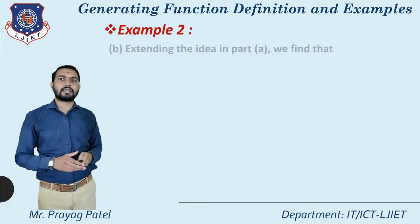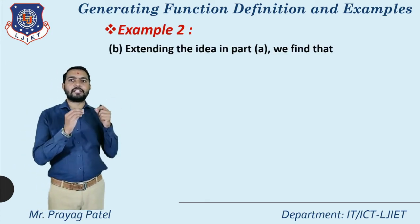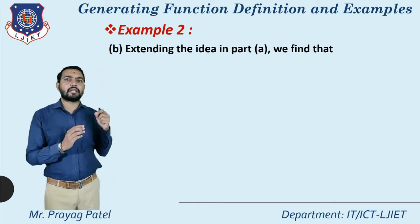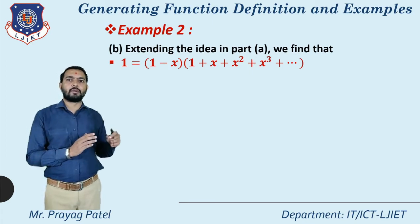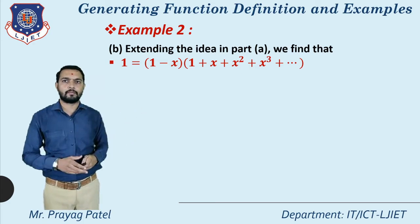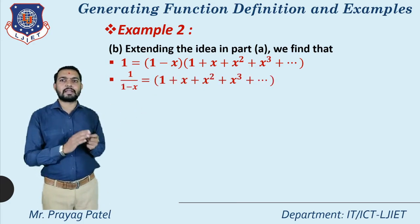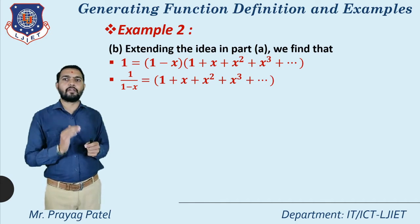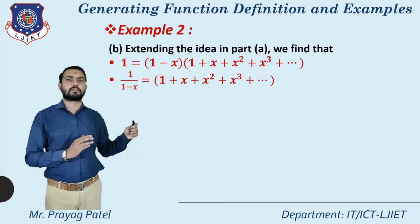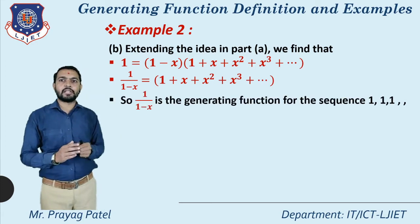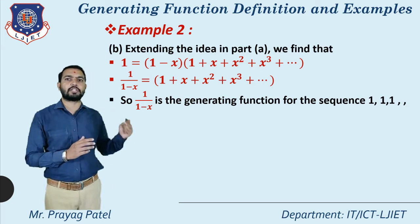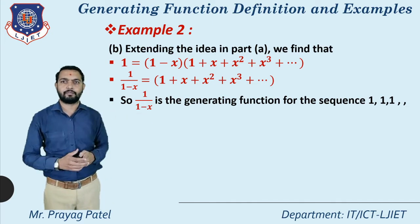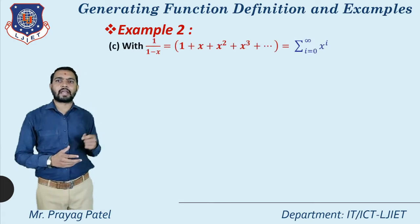Part b: Extending the idea from part a, we find 1 = (1-x)(1 + x + x² + x³ + ...). So 1/(1-x) = 1 + x + x² + x³ + ... and thus 1/(1-x) is a generating function for the infinite sequence 1, 1, 1, 1, 1, 1, ...